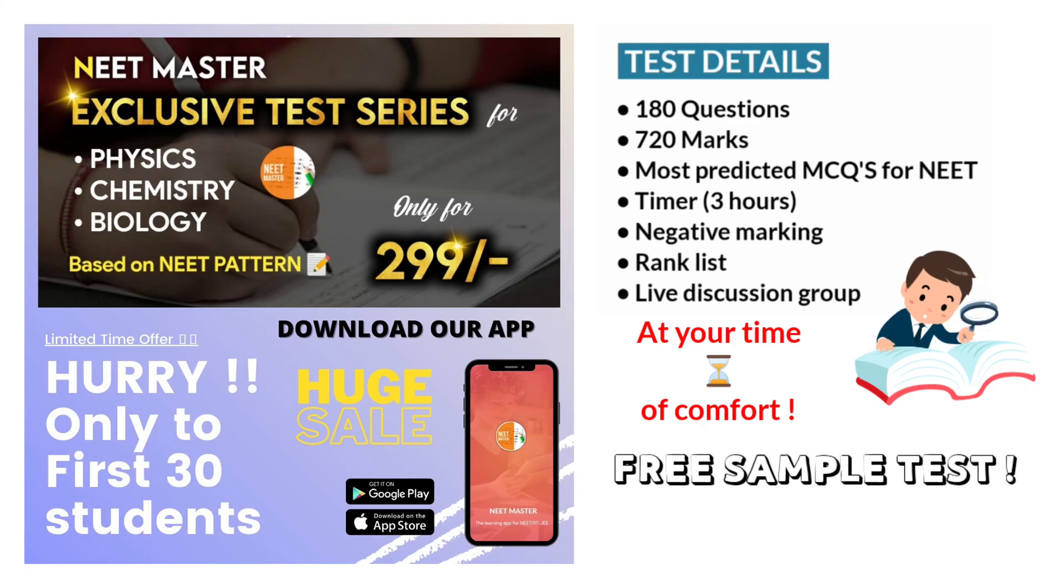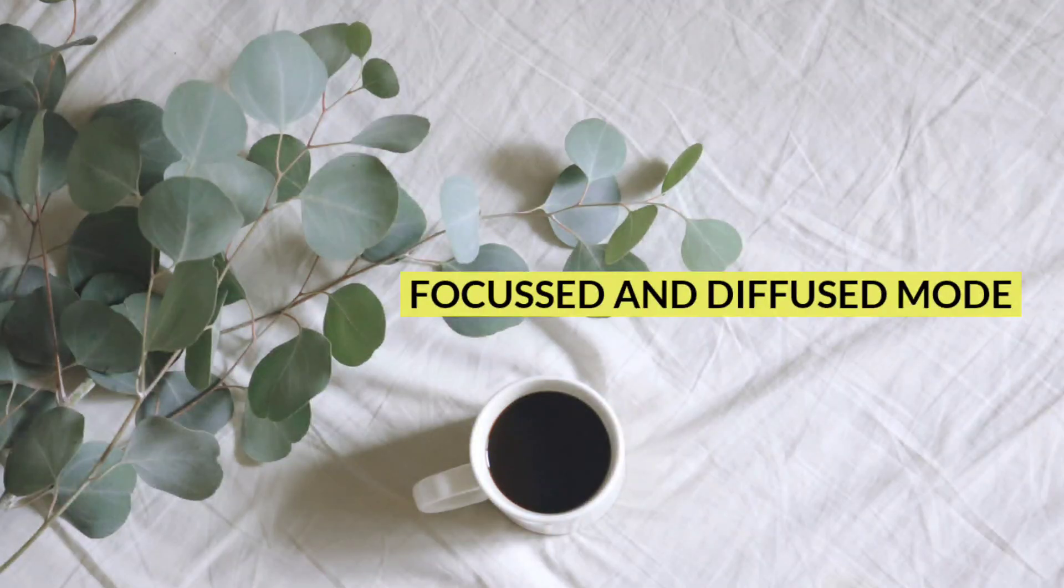If you like to join, download our app NEETMASTER. I have given a link in description and buy our test series. Okay, then without wasting a moment, let us dive into the topic. There are two main ways we process information in our brain. If you understand these two modes of thinking, you can solve even difficult problems very easily.